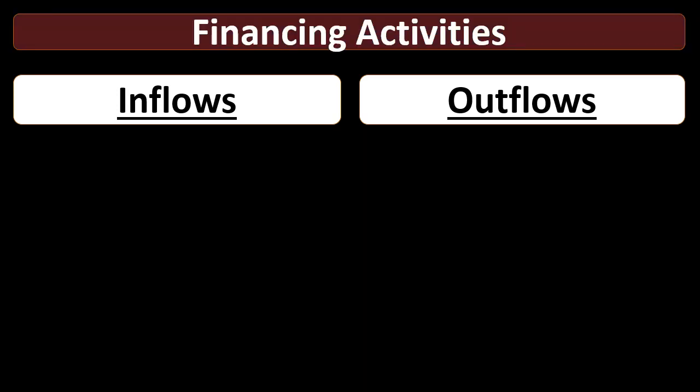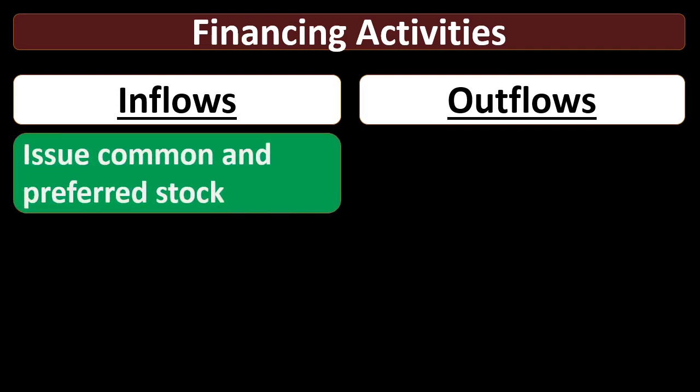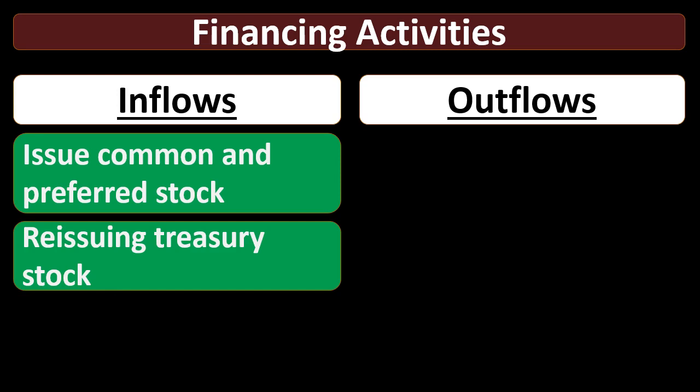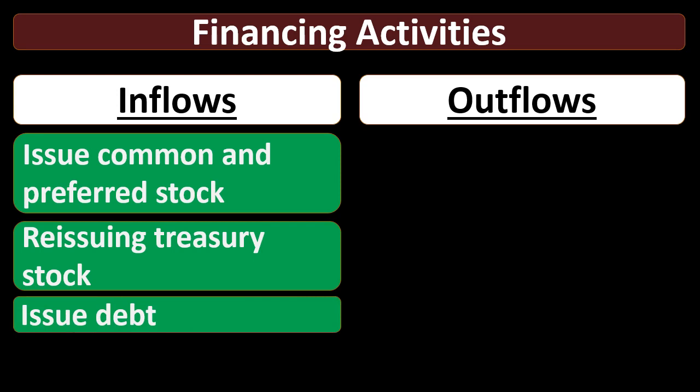The final component is financing activities. Inflows include the issuance of common and preferred stock — when we issue stock, we're getting owner investment into the company. We also have the reissuing of treasury stock and the issuance of debt. These entries don't involve income statement accounts — when issuing stock, we debit cash and credit common stock or additional paid-in capital — so they're not operating activities. Since they also don't involve purchasing an asset, they're financing activities.